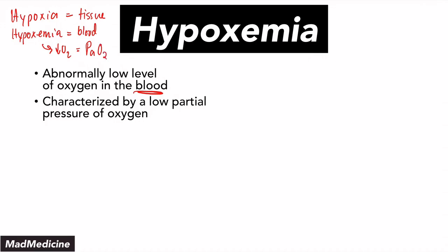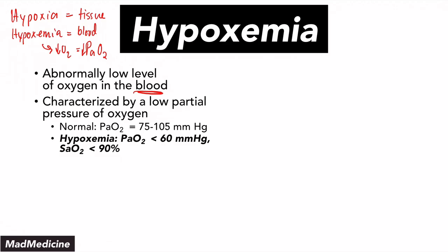Your normal PaO2 is somewhere around 75 to 105 mmHg. But in hypoxemia, you're going to have a PaO2 less than 60 mmHg and an SaO2 or O2 sat less than 90% saturation. This might seem a little confusing, so we're going to do a quick review of all these numbers and essential concepts. The numbers themselves might not be as important since they're often given to you on the exam, but you need to know the main concepts.